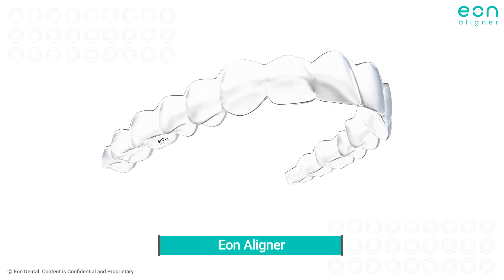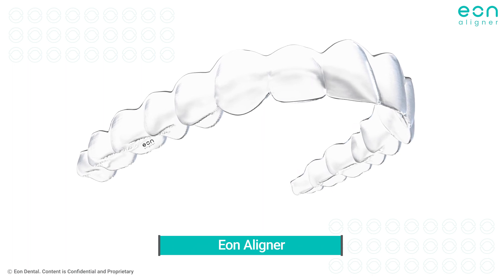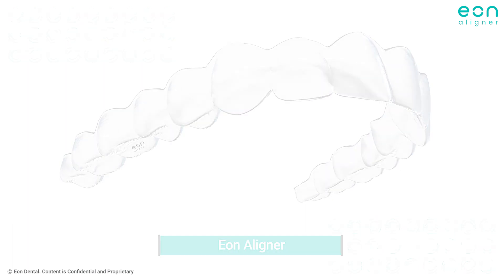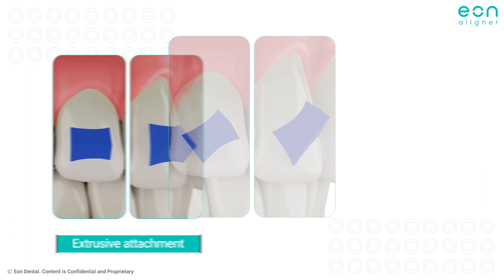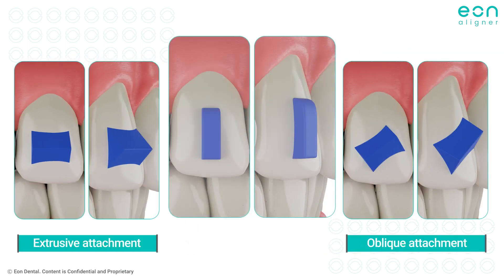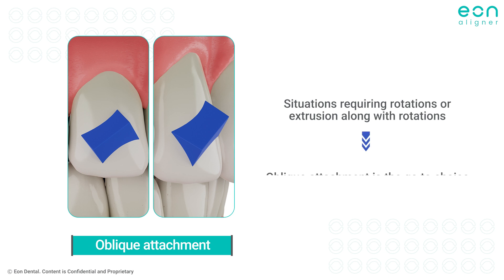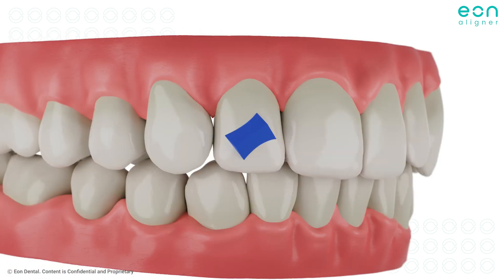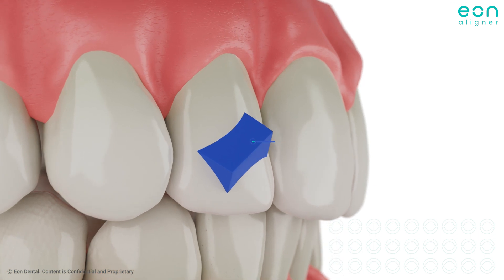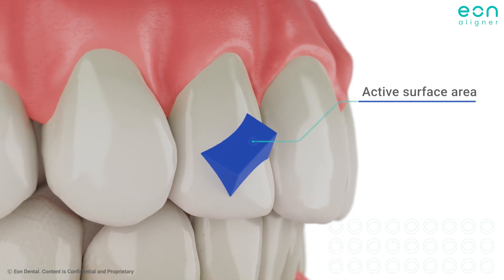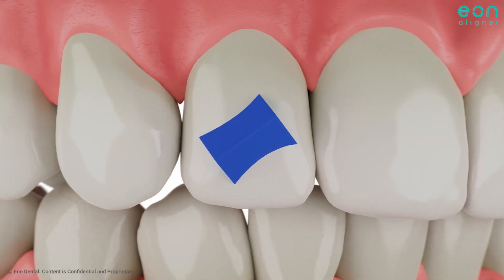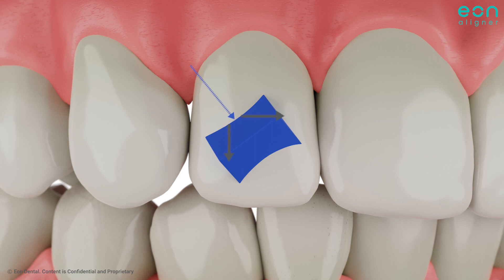Despite the limitations mentioned, we will now reveal effective techniques using EON aligners to overcome the resistance of this tooth and aid in its repositioning. Adding the right attachment can significantly improve the predictability of certain movements by directing the vectors of forces in the right way. For situations requiring rotations or extrusion along with rotations, the oblique attachment is the go-to choice. Its unique configuration provides the aligner with enough active surface to achieve these movements in a more predictable manner, with a lot of surface area as perpendicular as possible interacting with the aligner and pushing vectors of force. In addition, the beveled nature allows for tolerance if there is slippage between the aligner and the attachment, and will continue to push the tooth in the desired direction.